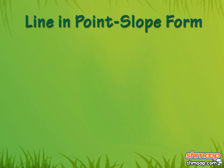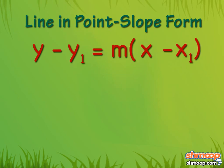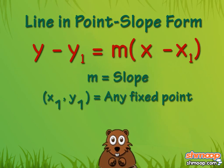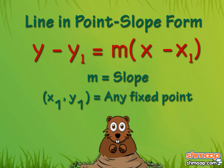A line is in point-slope form when it looks like this: y minus y1 equals m times x minus x1. Here, m is the slope of the line, and x1, y1 is any fixed point on the line.